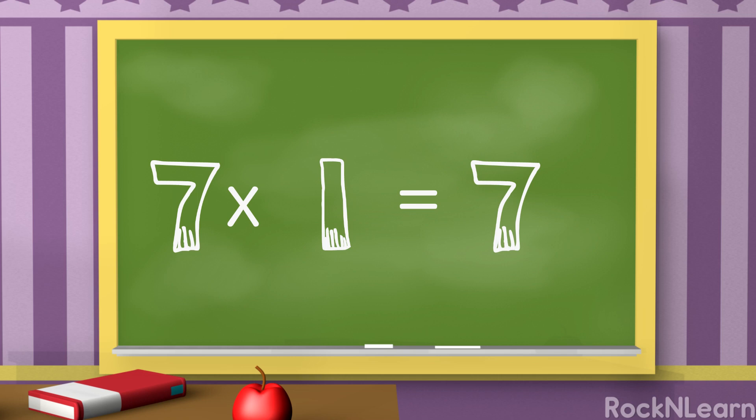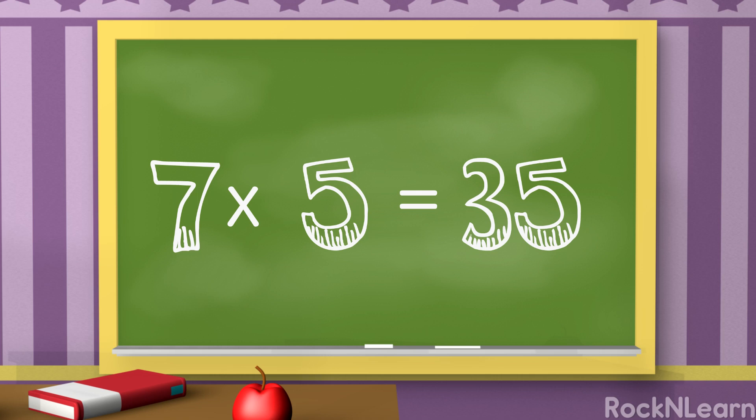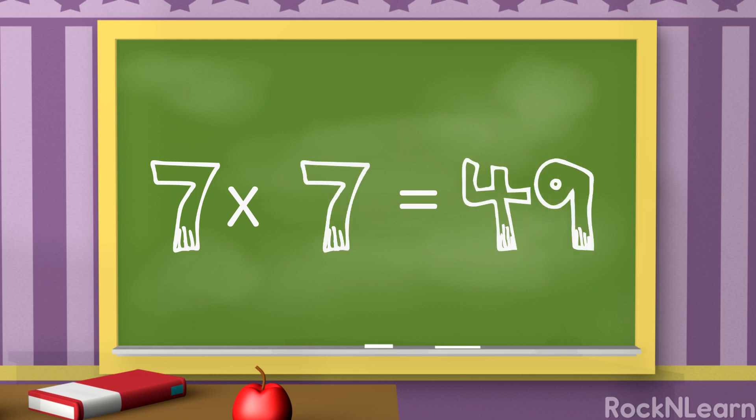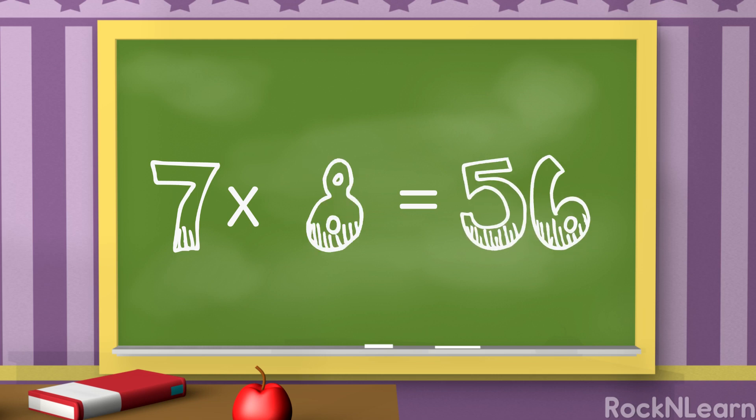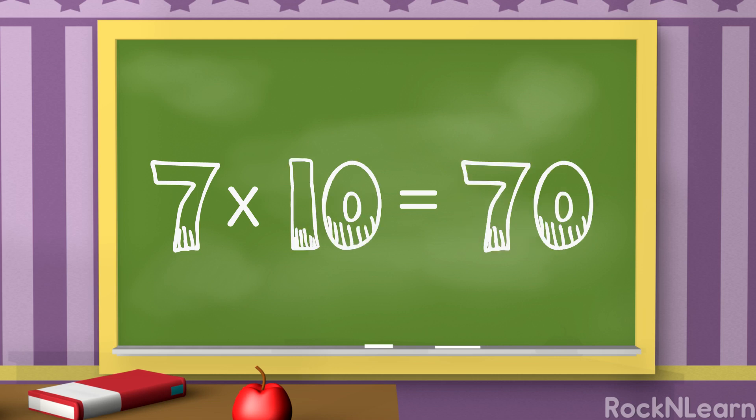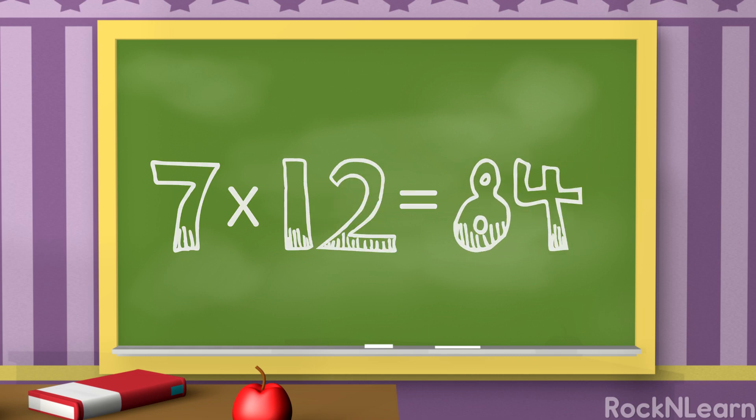Seven times one is seven. Seven times two is fourteen. Seven times three is twenty-one. Seven times four is twenty-eight. Seven times five is thirty-five. Seven times six is forty-two. Seven times seven is forty-nine. Seven times eight is fifty-six. Seven times nine is sixty-three. Seven times ten is seventy. Seven times eleven is seventy-seven. Seven times twelve is eighty-four.